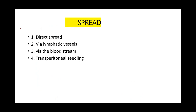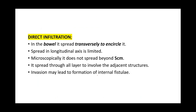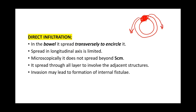How do these tumors spread? They spread either directly to adjacent structures, via lymphatic vessels, via the bloodstream, or through transperitoneal seedlings. With direct spread, it spreads to adjacent structures. In the bowel, it spreads transversely to encircle it. If the tumor is here in the lumen, the direction of spread goes transversely, keeps encircling until it becomes completely circumferential.